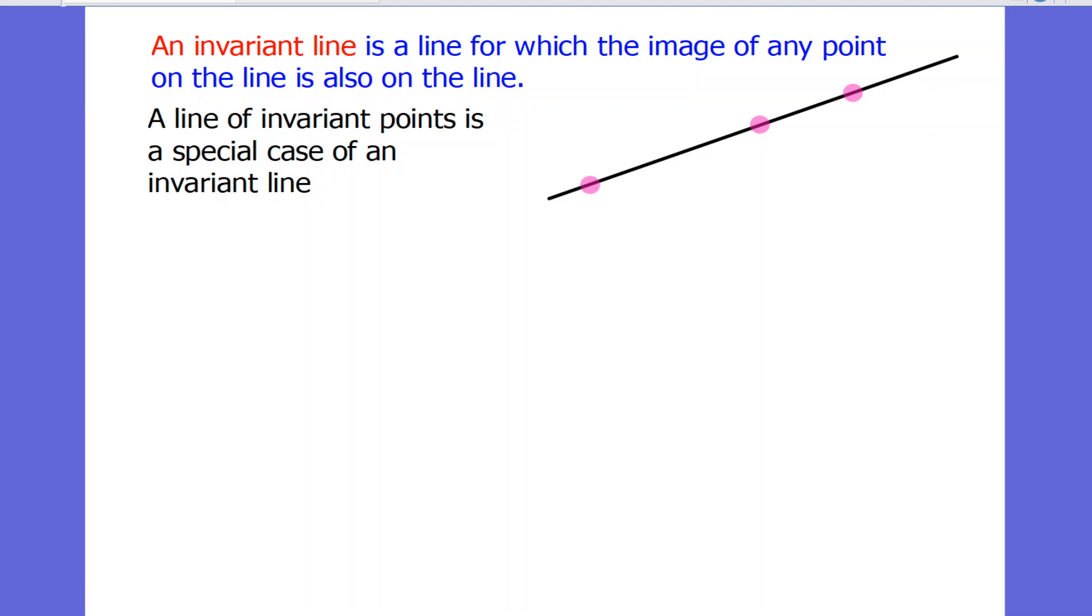If we look at what's happening here, it may be that this point here goes over to this one here. This point here goes over to there. This point here comes over to down there. Each of the images is still on the line. This would be an invariant line. And there might well be one point on here which goes to itself. But apart from that, the points go to somewhere else on the line.